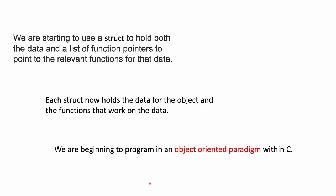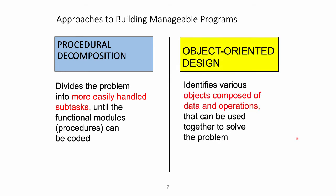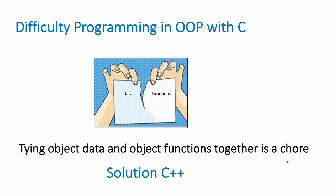We're actually beginning to program in an object-oriented paradigm within C. We mentioned on the first day that the approach for building a large system was to continually divide it into tasks. These tasks turned out to be our functions, and then we start worrying about how the data is passed between functions. In the object-oriented design world, it's a different approach — basically, we look at our world, identify the objects that are going to be in our world, and then figure out what the interaction is between the objects. It's kind of difficult, as we've seen, to program in an object-oriented programming paradigm within C. Tying the data and the object functions together is a bit of a chore.